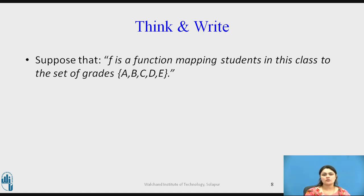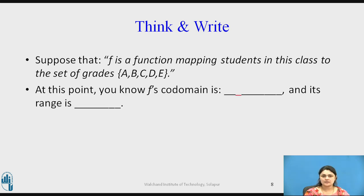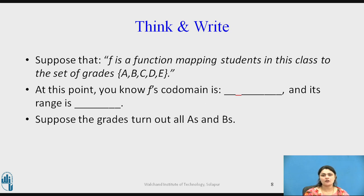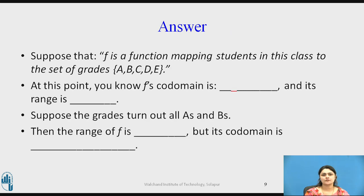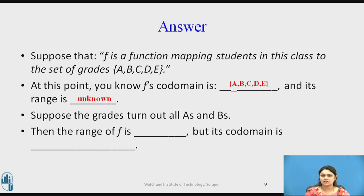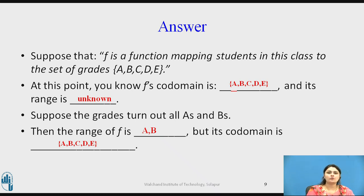Question: suppose F is a function mapping students in this class to the set of grades {A, B, C, D, E}. What is the co-domain and range of F? The co-domain of F will always be {A, B, C, D, E}. The range is unknown until we know the actual grades. Now suppose the grades turn out to be all A's and B's — then the range of F is {A, B}, but the co-domain remains {A, B, C, D, E}.